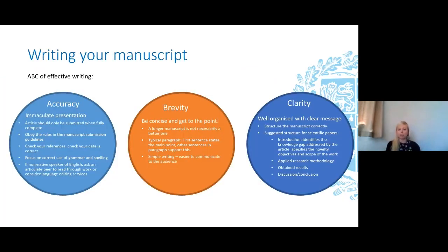We'll touch briefly on writing your manuscript. When writing your paper, it is important to remember the ABC of effective writing: accuracy, brevity and clarity. In terms of accuracy, it is important to have immaculate presentation. Your article should only be submitted when fully complete. Read the manuscript submission guidelines and ensure the paper is presented according to the general requirements. Check that statements are referenced correctly and that your data is correct. It is also important to spend some time on correct grammar and spelling. If you are not a native English speaker, you could consider using a professional editor or translator — many places offer language editing services.